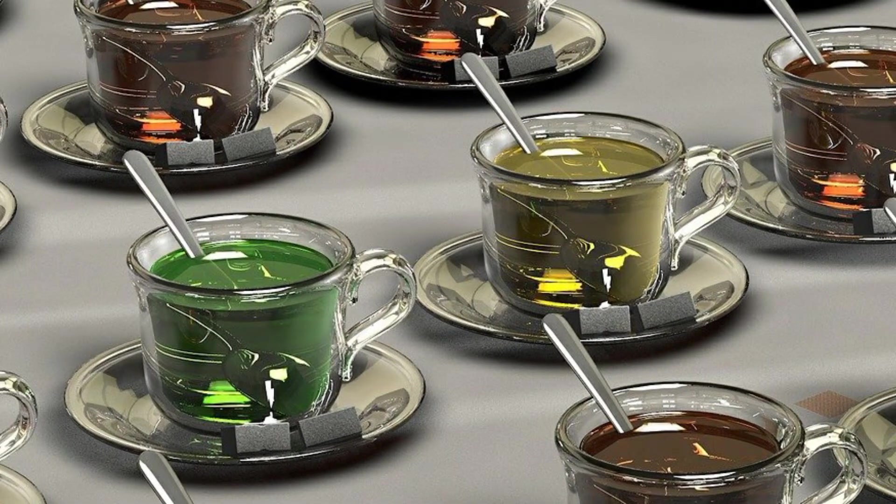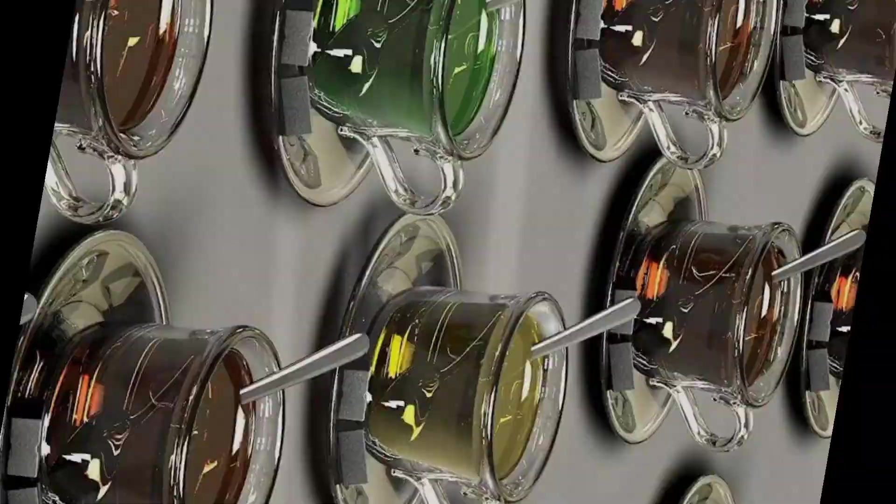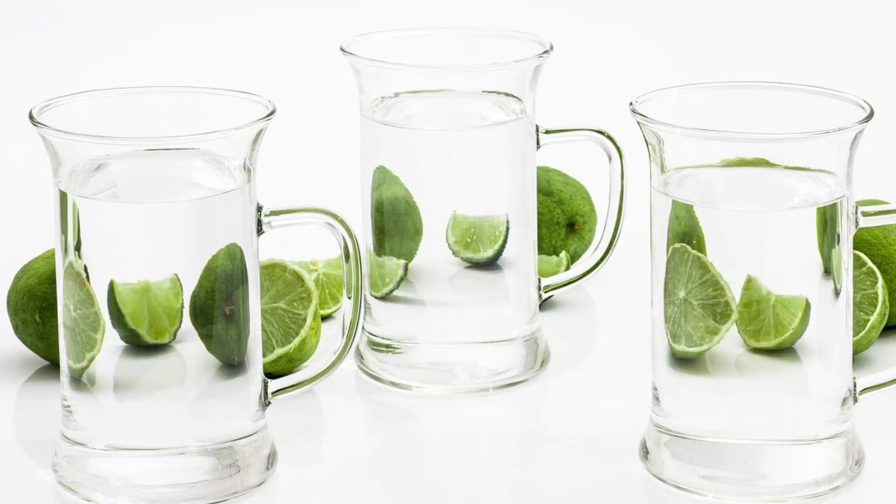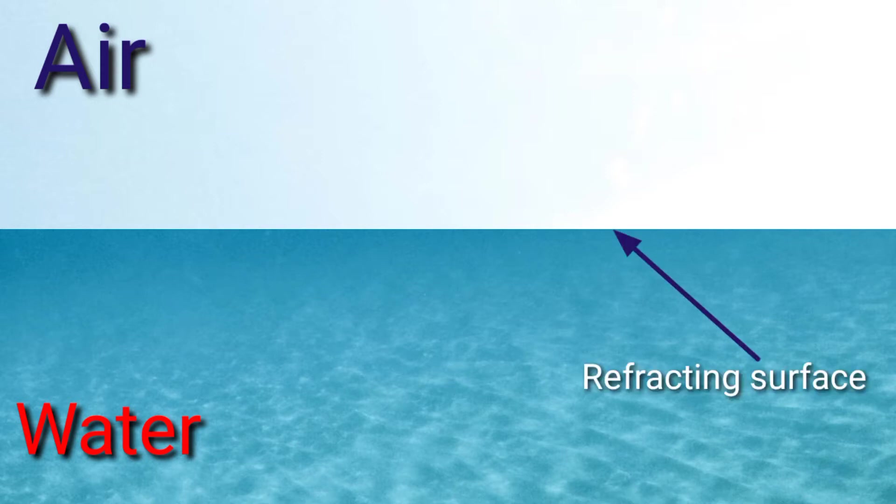A light ray changes its direction at the interface separating two media. Let us consider two media: water and air. The surface of the water separates the two media. The speed of light changes when light propagates from one medium to another medium.